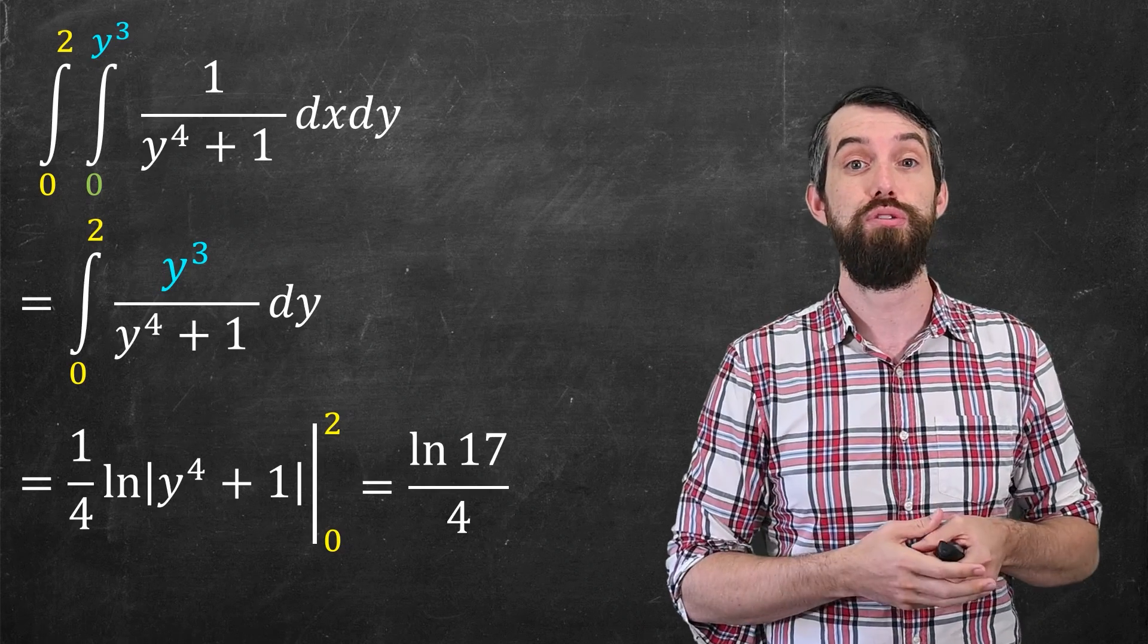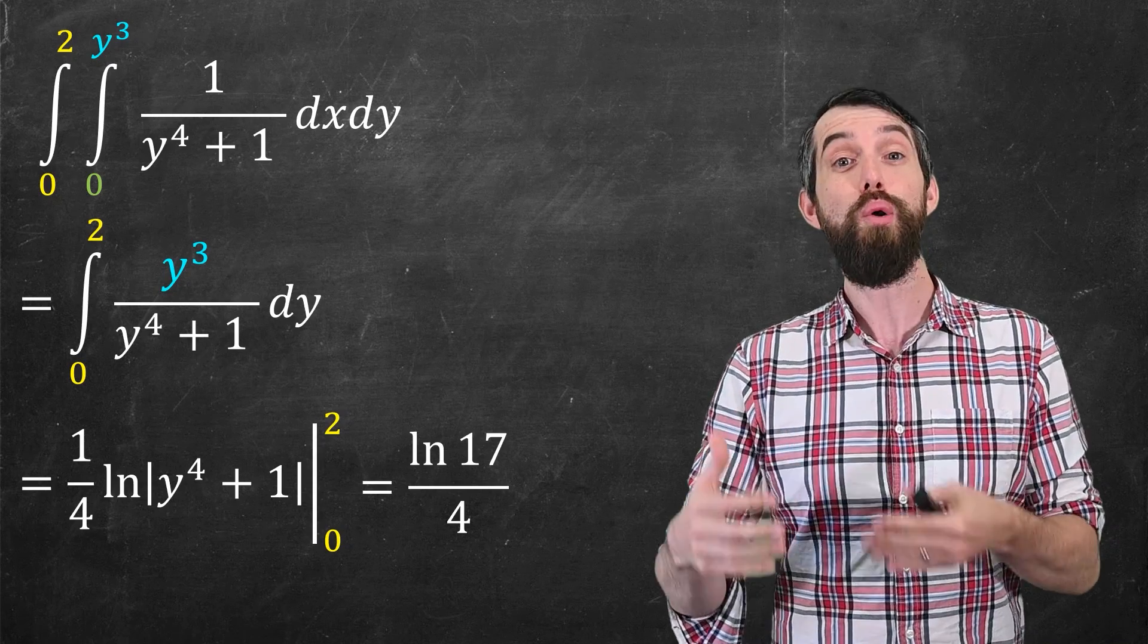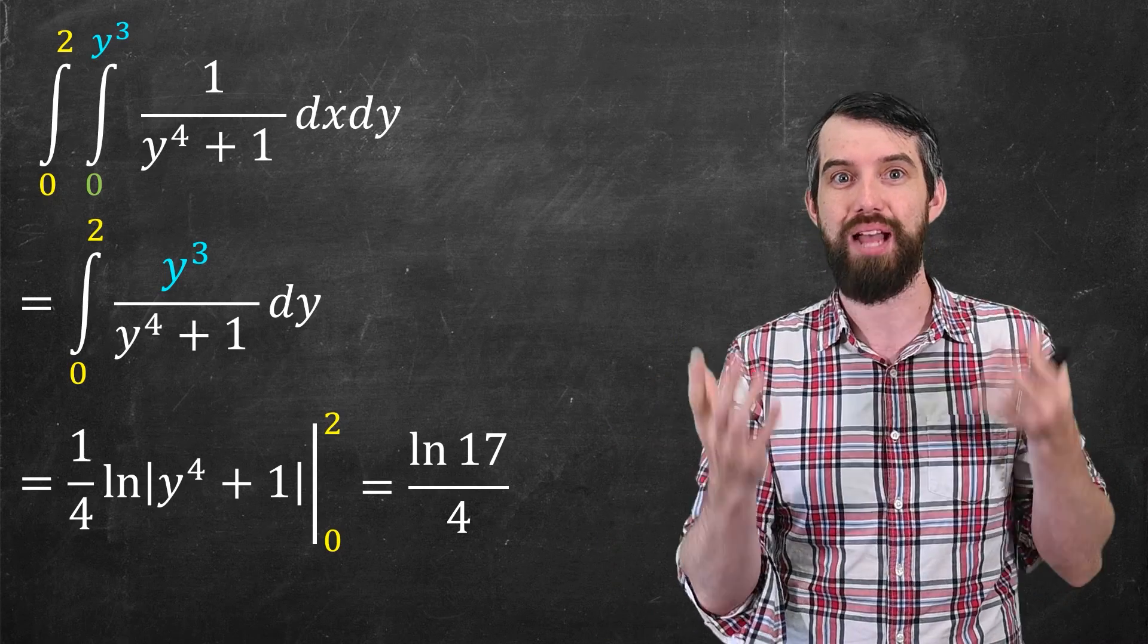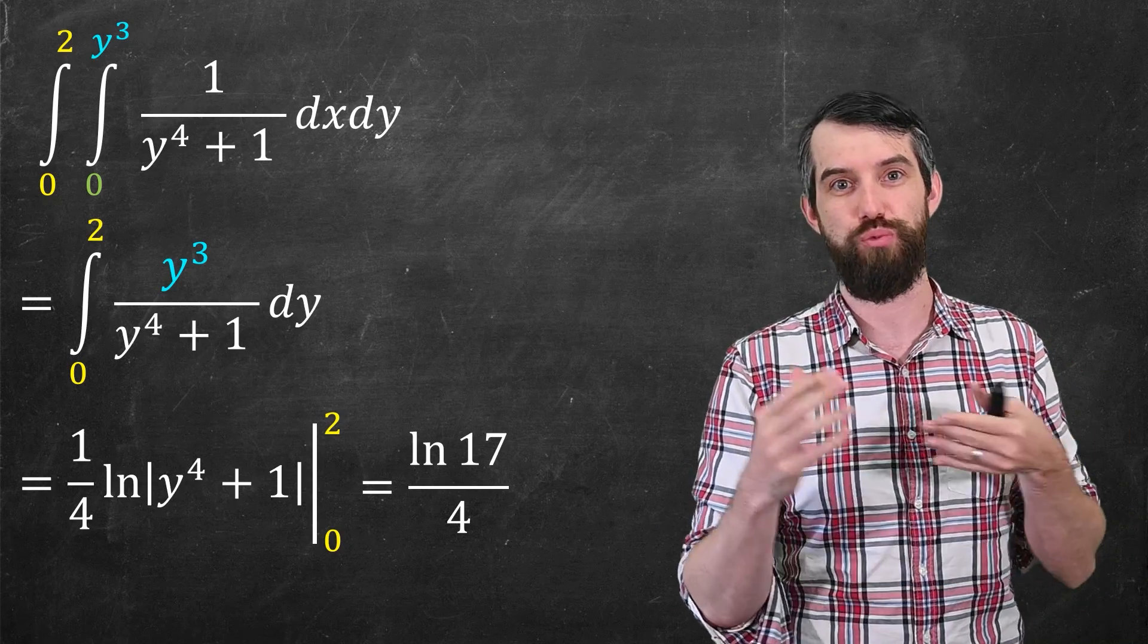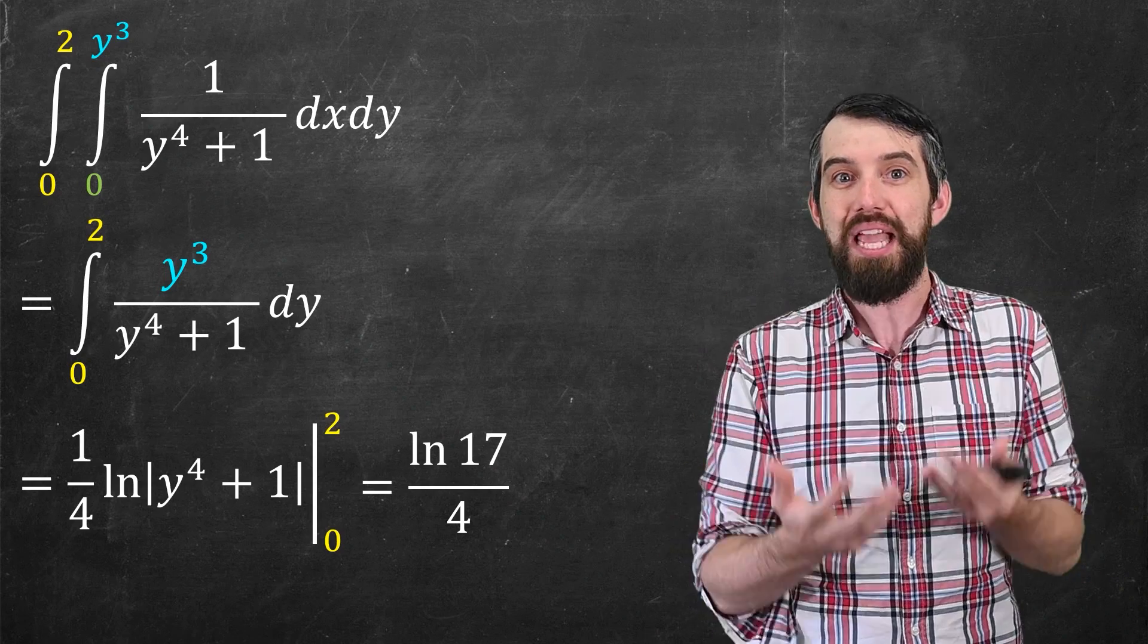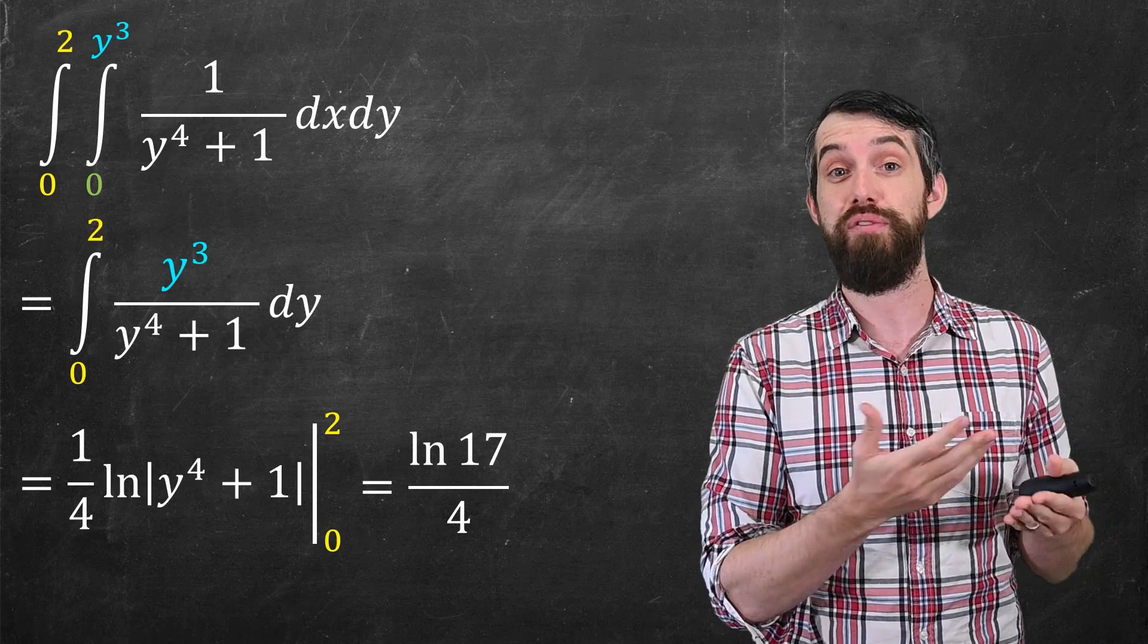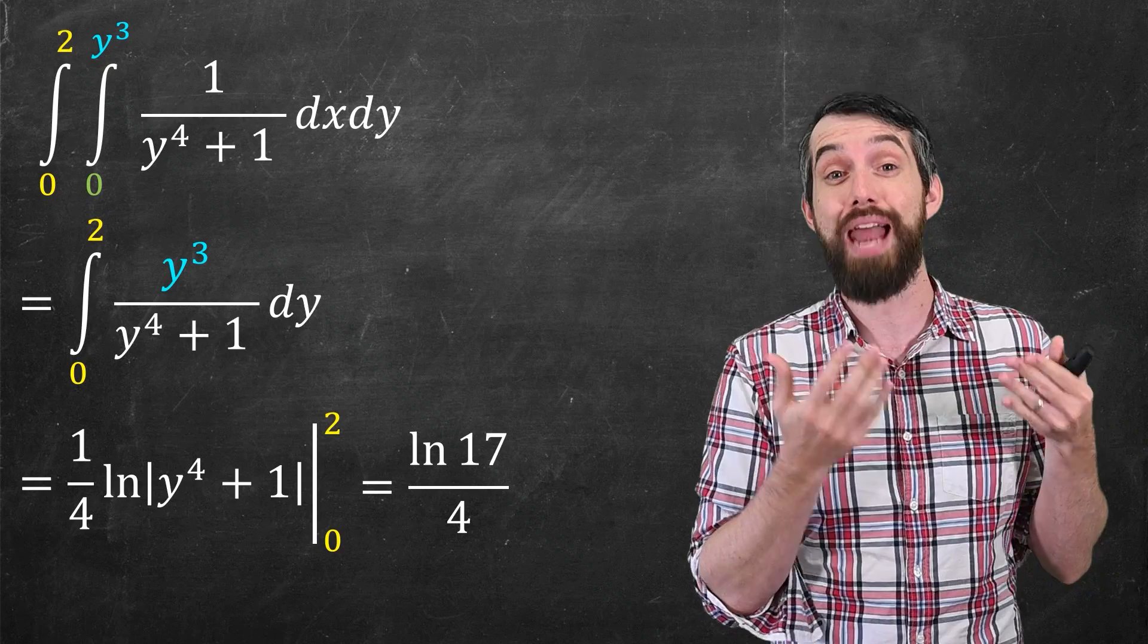So the moral of this particular double integral is that sometimes when you've written a double integral down, you cannot do it easily by algebraic methods. But perhaps you can reinterpret the region that is implied by the limits of integration such that you can talk about the same quantity, but with the order of integration reversed. And maybe you get lucky. Maybe reversing the order of integration transforms it from an intractable integral to one that you can actually do.